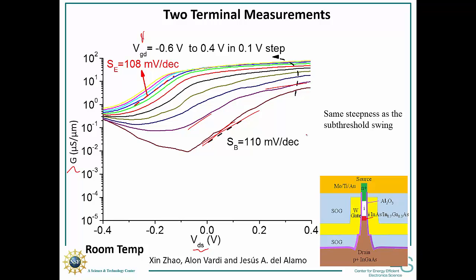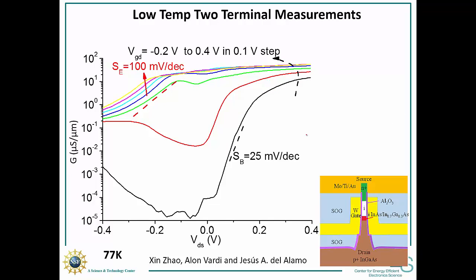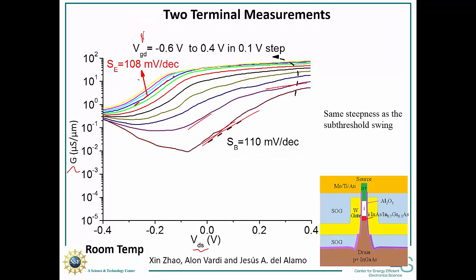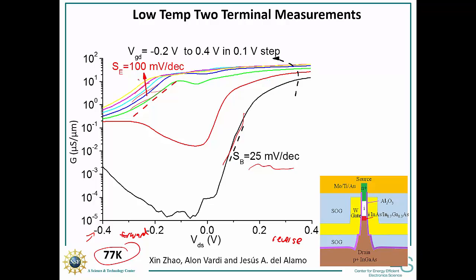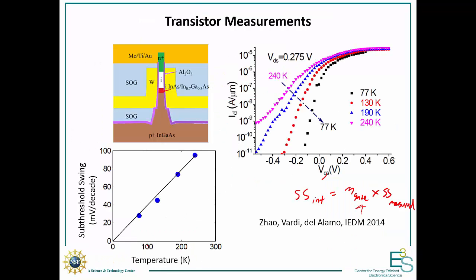Things get very interesting when we cool this device down. At 77 Kelvin I see two very distinct regimes. In one regime — around 25 millivolts per decade — we see a really steep turn-on. In the forward bias regime, the steepness actually stays almost the same, changing very little from room temperature — it's almost temperature independent in forward bias. While in reverse bias, we see a sharp temperature dependence, the same kind of temperature dependence as in the MOSFET, reaching about 25 millivolts per decade at 77 K.